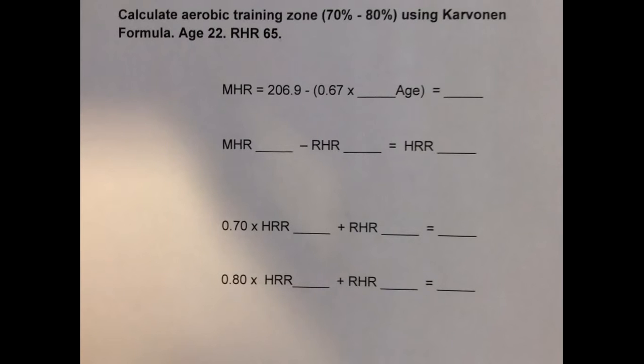The first thing we do is calculate the maximum heart rate using the formula 206.9 minus 0.67 times the age, which in this case is 22. So that gives an answer of 192.16. So we can round that to 192 beats per minute.